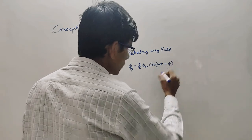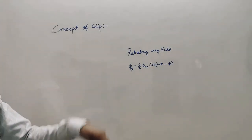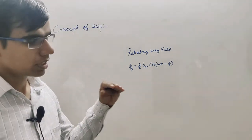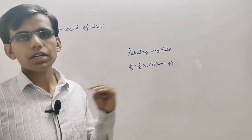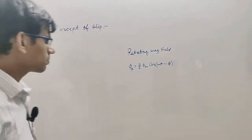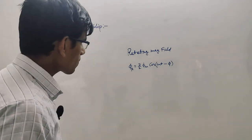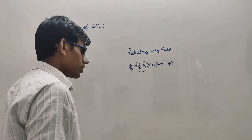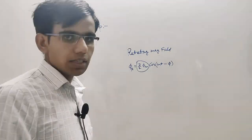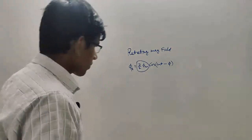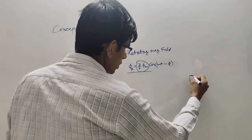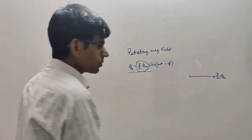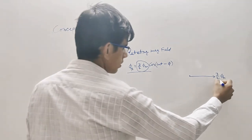The sign will depend upon the selection of directions. I explained that you must take proper conventions so that we can remove any kind of doubt. The main thing was: this is a constant magnitude, but it is rotating. So this is a Rotating Magnetic Field, which has magnitude 3/2 phi m, rotating with the speed of the supply frequency.